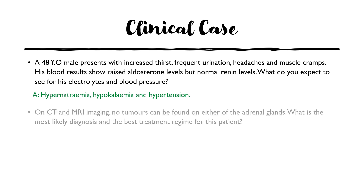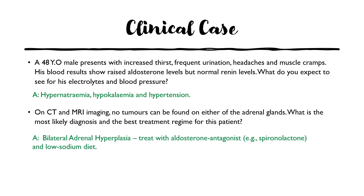As a follow-up, on CT and MRI imaging no tumours can be found on either adrenal gland. Because no tumours are identified, adrenal hyperplasia is more likely — which is harder to pick up on a scan alone. Combined with the raised aldosterone levels, bilateral adrenal hyperplasia is the most likely diagnosis, and the best treatment regime would be an aldosterone antagonist such as spironolactone, combined with a low-sodium diet.